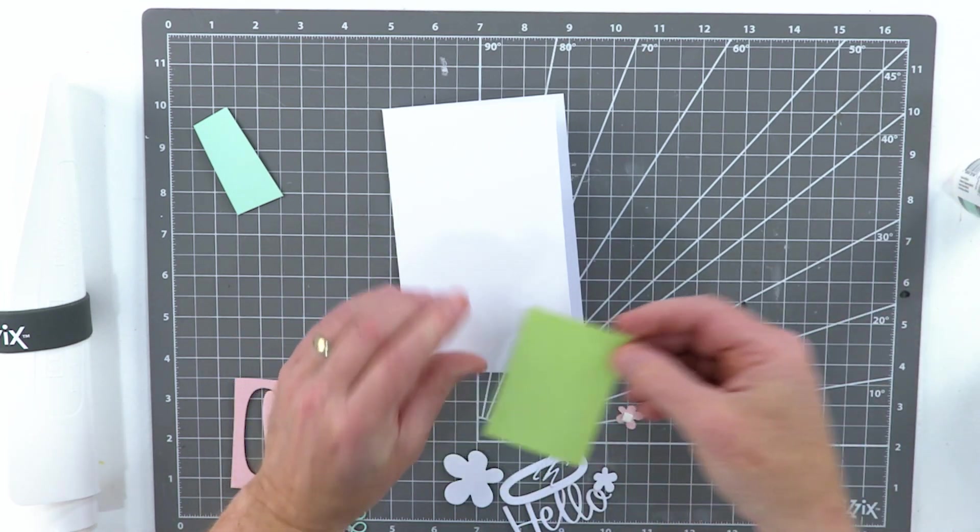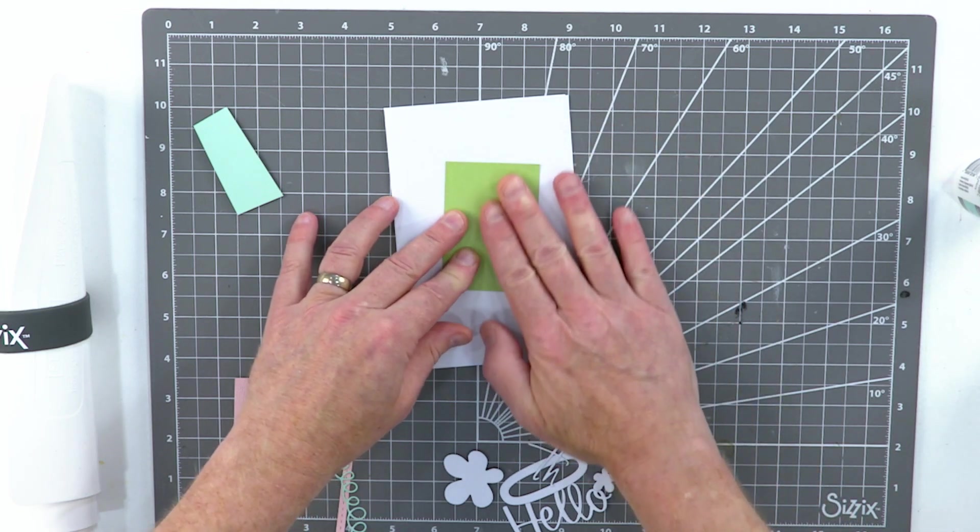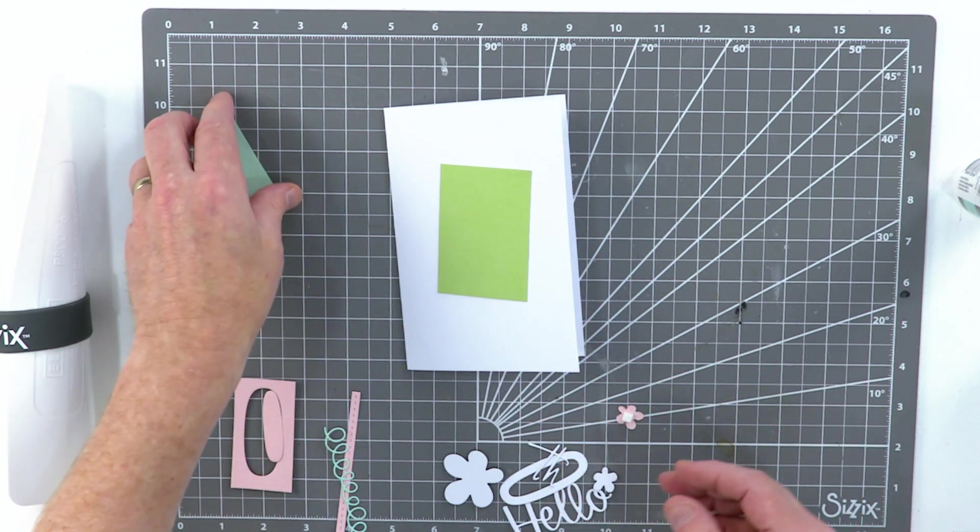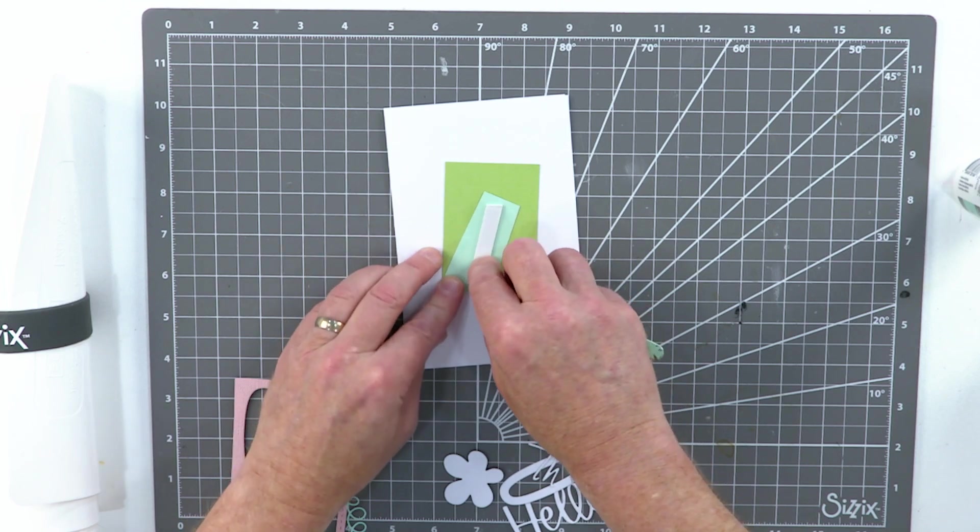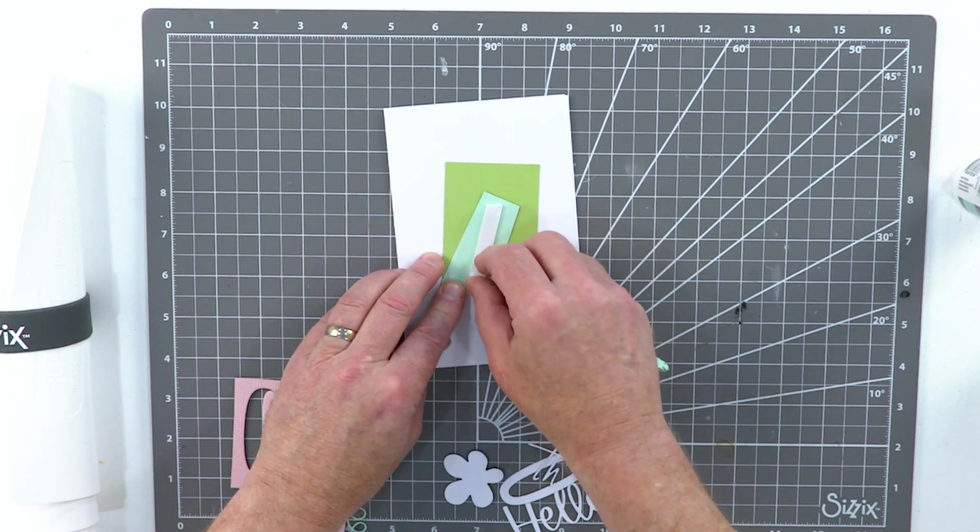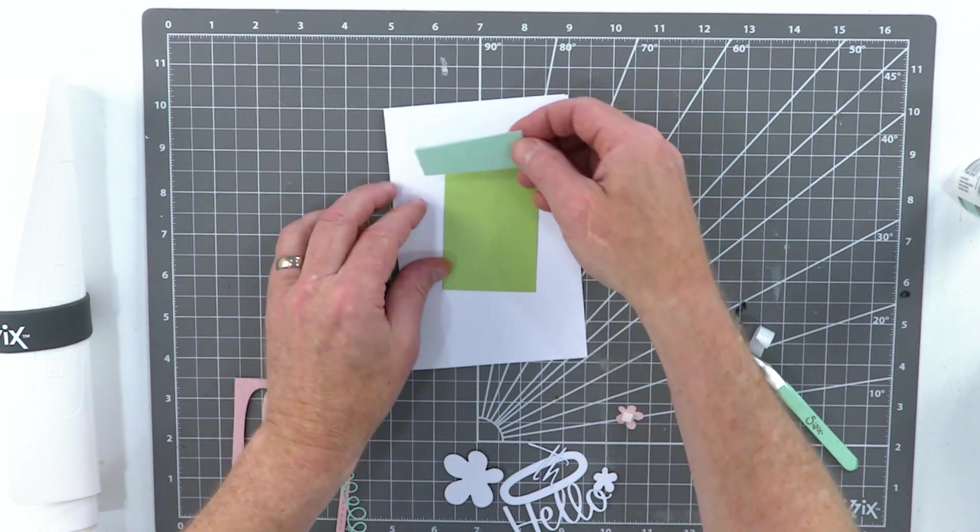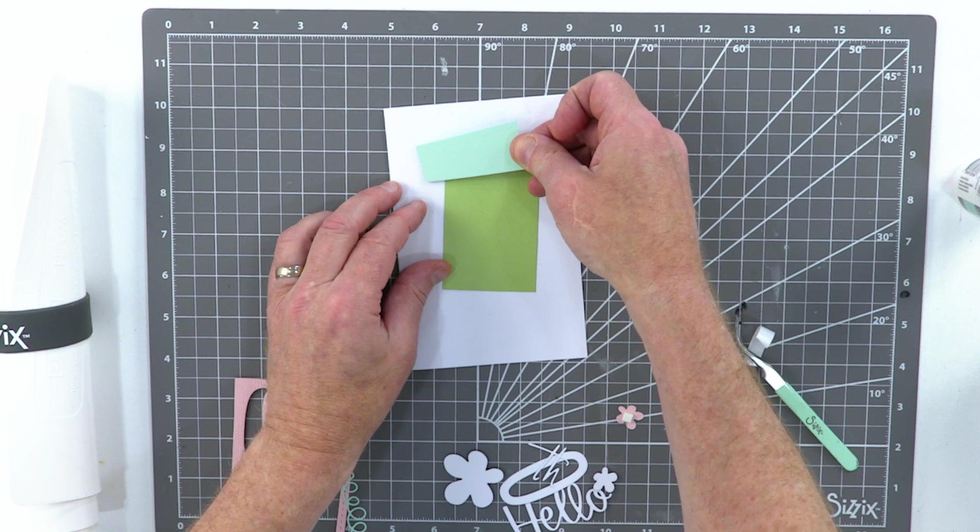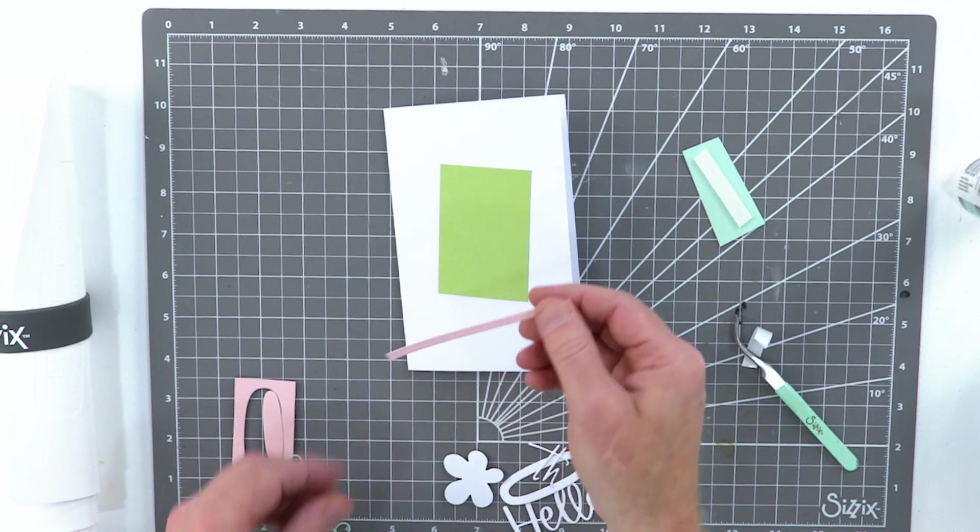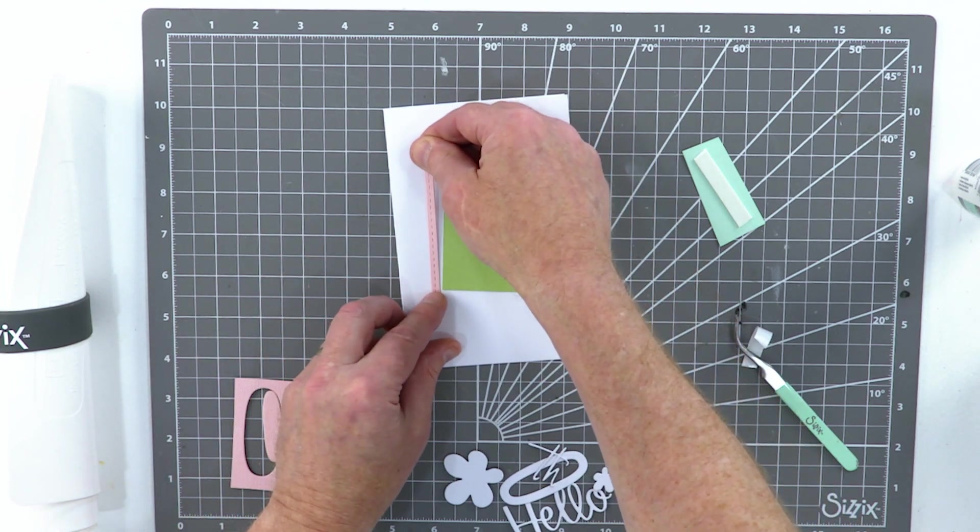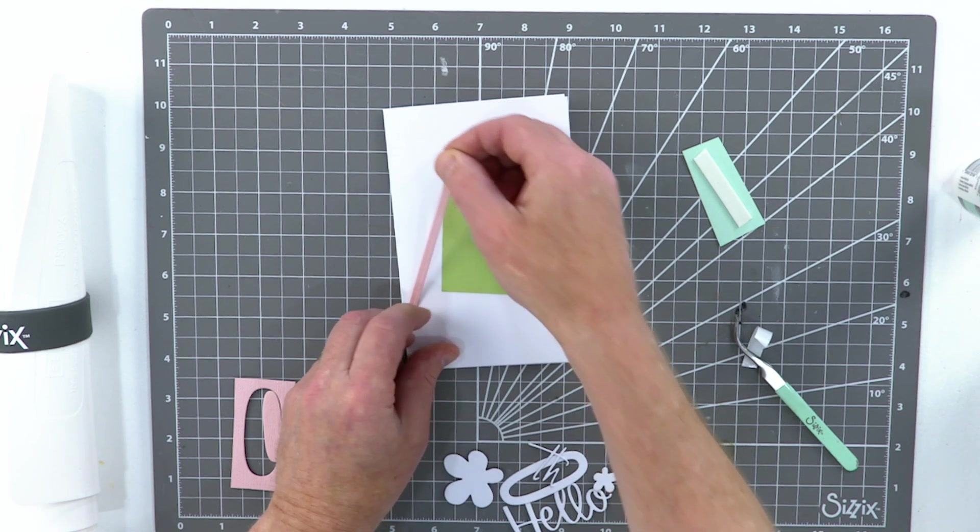It's all about using the white space, leaving white space, and getting a balance. So let's take a little bit of my lovely express glue, scribble on the back, and I'm going to drop this in somewhere around here.